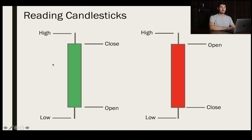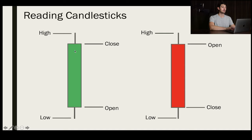It's absolutely the same with a red bar. The wicks represent the highs and lows for both green and red bars. So we have the open here, it closed here, the absolute high during that time frame was at the top of the wick, and the absolute low was at the bottom of the wick.